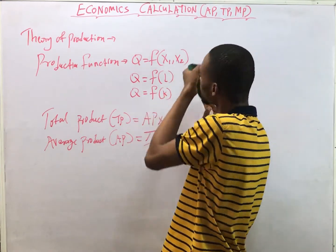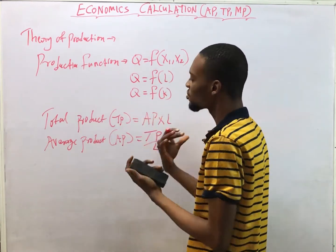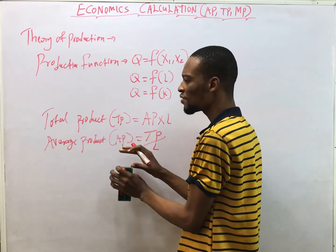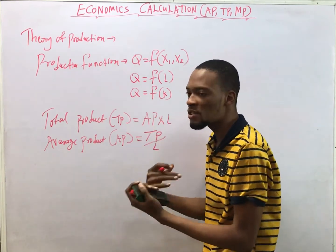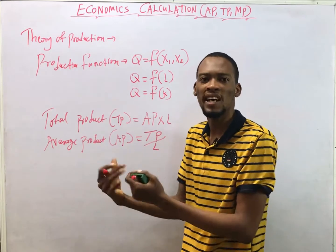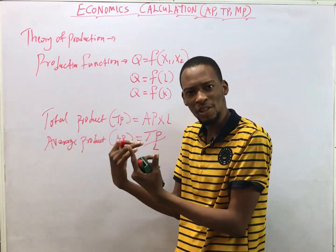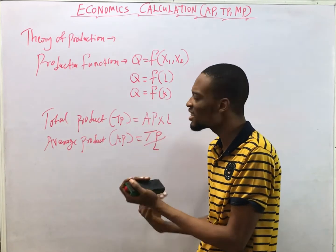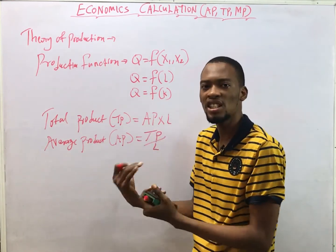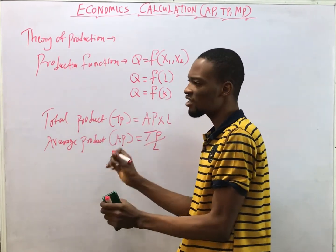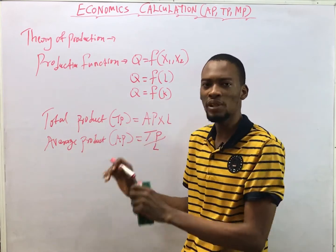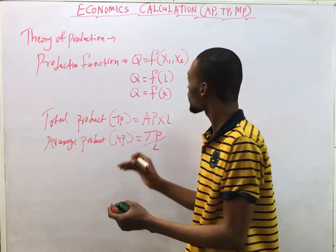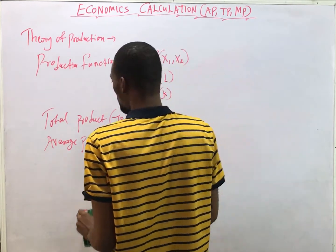Marginal product can be explained like this: if 10 workers can give a certain output, what would be the result of adding another worker? It tries to give the effect of adding or changing a worker — changing the input — to see what will happen. So we manipulate the input to know the additional output that can be obtained.